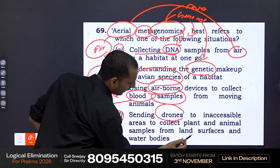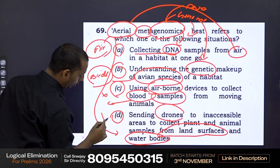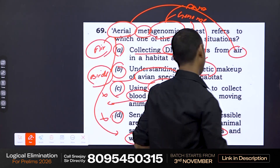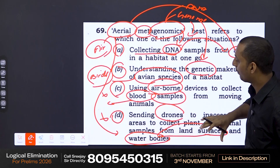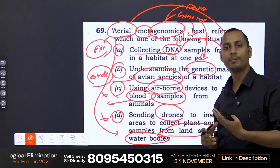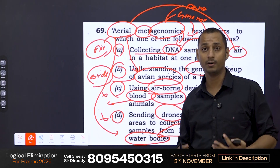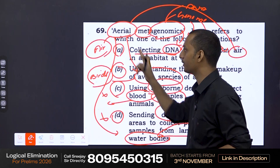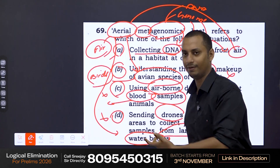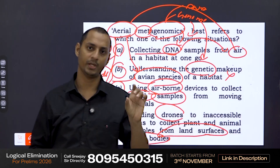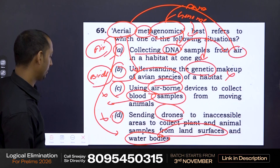Option D talks about sending drones to collect samples from land and water bodies. Does it have any relation with 'aerial' asked in the question? No. Therefore, you can eliminate option D. Now between option A and B: option A deals with DNA collected from the air, satisfying both aerial and genome. Option B talks about understanding the genetic makeup of avian species, but a DNA sample of a bird can also be collected from the ground — from eggs, for example. So it does not necessarily relate to aerial. Therefore, you can go with option A, as it satisfies both DNA/genome and aerial. Always go with the option which satisfies both words, not just one.